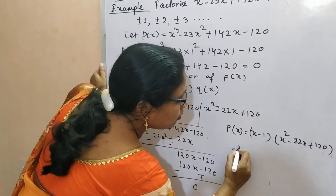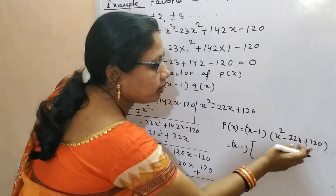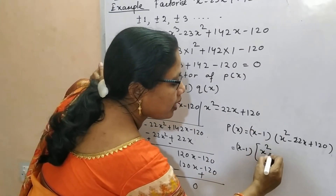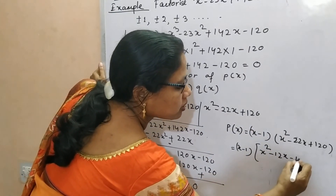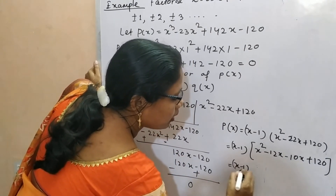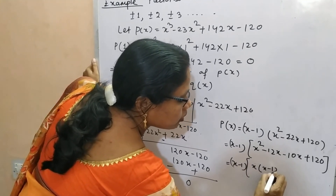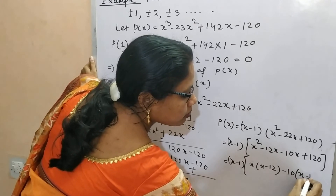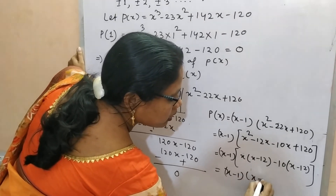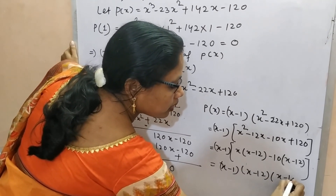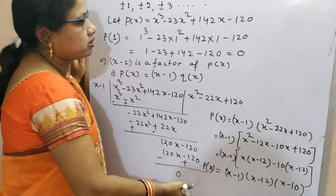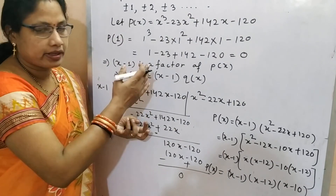Factorizing X² minus 22X plus 120 by splitting the middle term: X² minus 12X minus 10X plus 120, which gives X minus 12 multiplied with X minus 10. So P of X equals X minus 1, multiplied with X minus 10, multiplied with X minus 12. This is the final result. By using the factor theorem, you can factorize any polynomial.